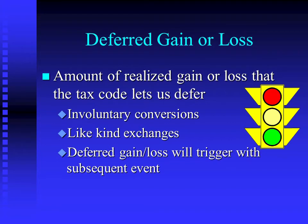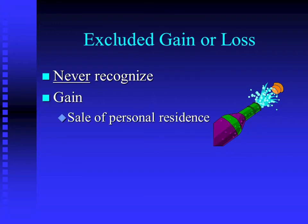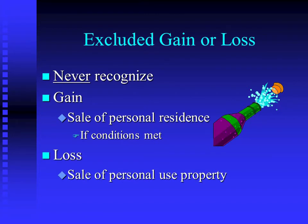The deferred gain or loss will trigger with a subsequent event — most commonly when you dispose of the replacement property. Excluded gain or loss means gone away forever. We only have two of them: we will never recognize the gain on the sale of the personal residence if you meet the conditions, and we never get to recognize losses on the sale of personal use property — the only exception being a casualty loss where insurance was not enough to trigger an involuntary conversion gain.